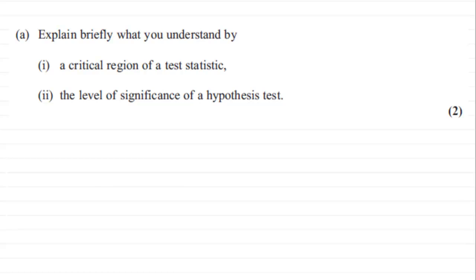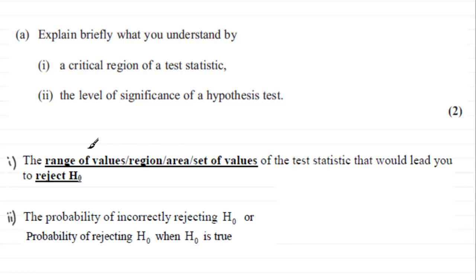OK, well the answers to this are the following. So, for part one, a critical region of a test statistic is essentially the range of values or the region or area or set of values of the test statistic that would lead you to reject the null hypothesis.